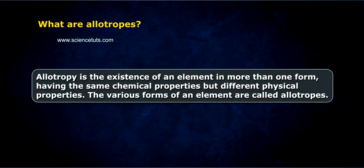What are Allotropes? Allotropy is the existence of an element in more than one form, having the same chemical properties but different physical properties. The various forms of an element are called Allotropes.